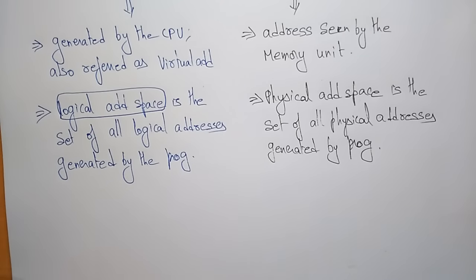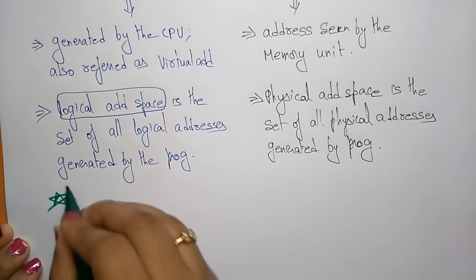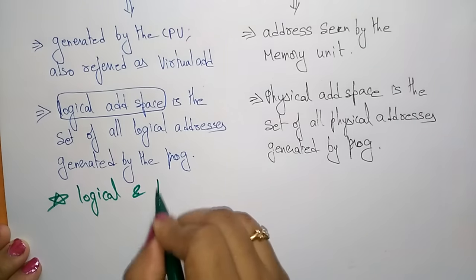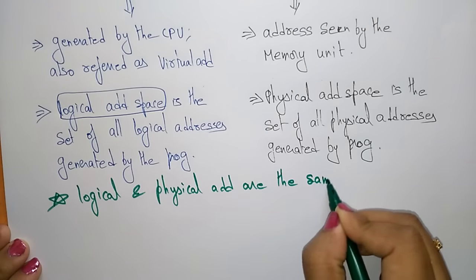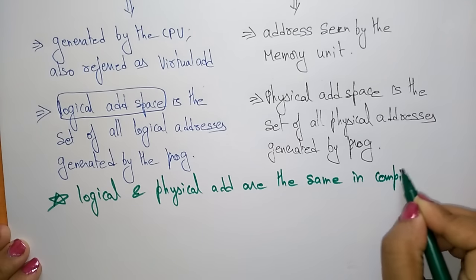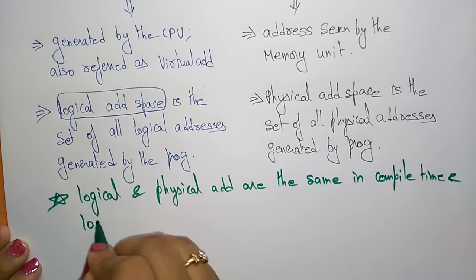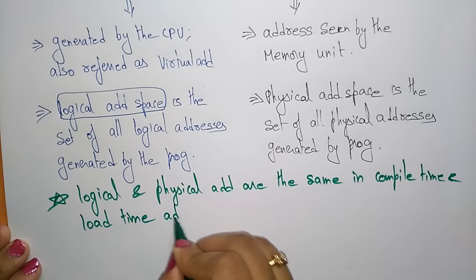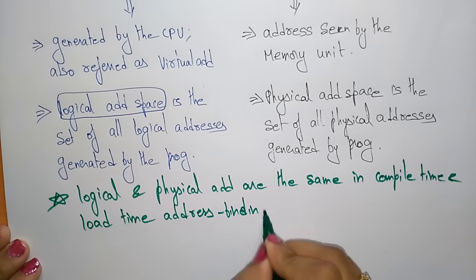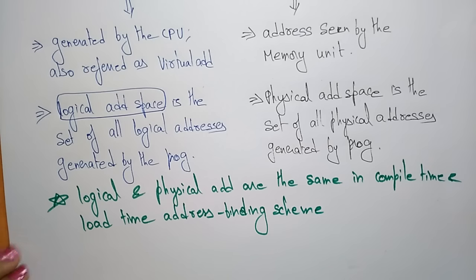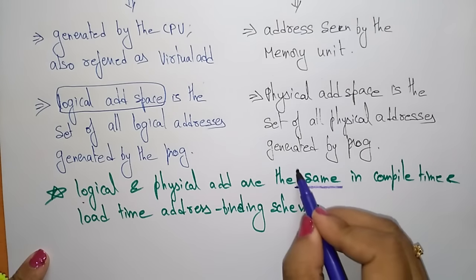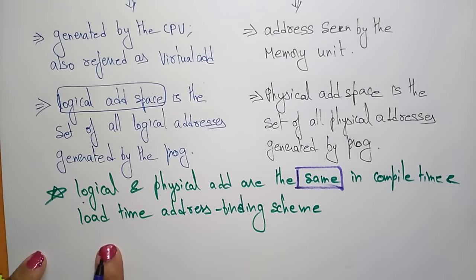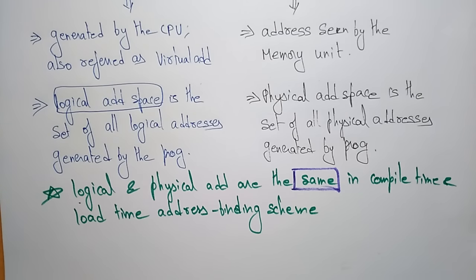An important point to remember: logical address and physical address are the same at compile time as well as at load time — the load time address binding scheme. So at both compile time and load time of the program, the logical address and the physical address are the same.